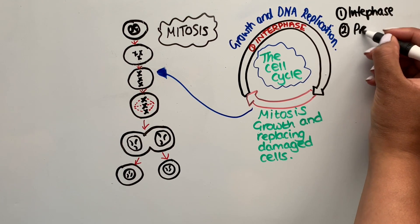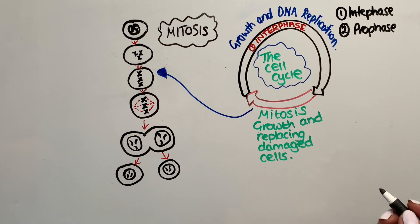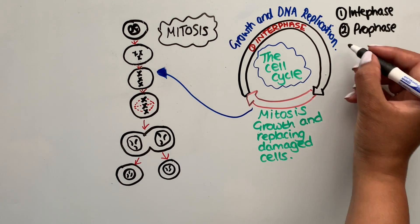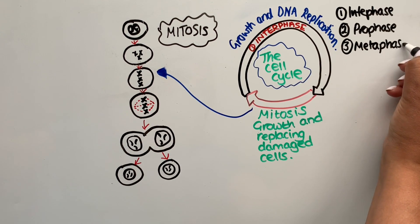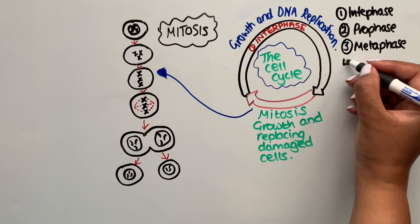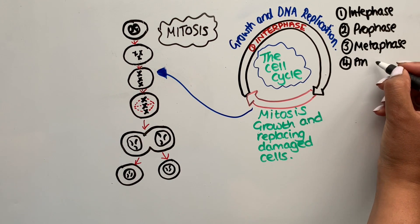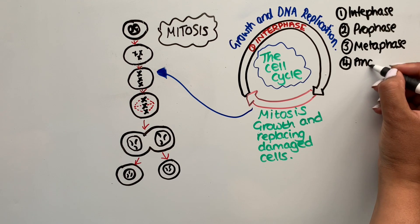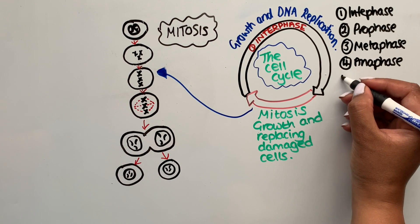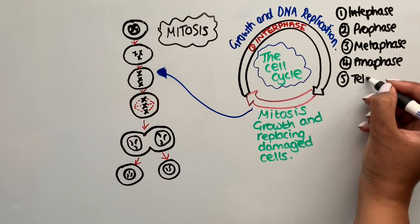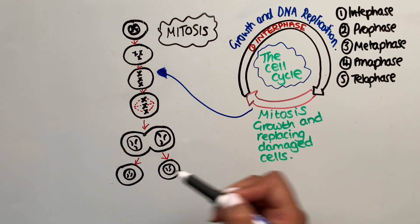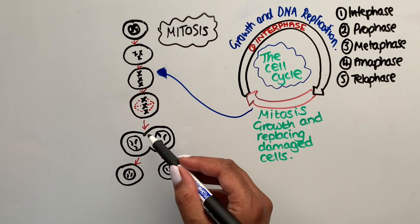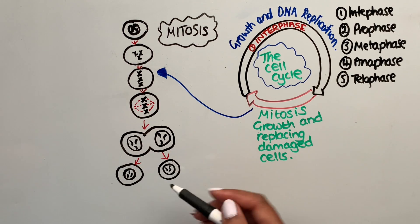The second process is prophase, where the chromosomes condense, getting shorter and fatter. The third stage is metaphase, where the chromosomes line up in the centre of the cell. The fourth stage is anaphase, where each chromosome is pulled to opposite ends of the cell. The fifth and final stage is telophase, where membranes form around each set of nuclei, and the cytoplasm and membrane divide to produce the two identical cells.